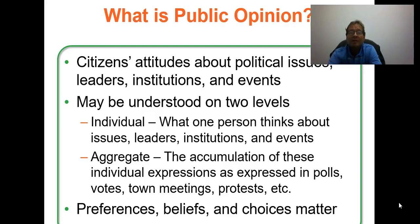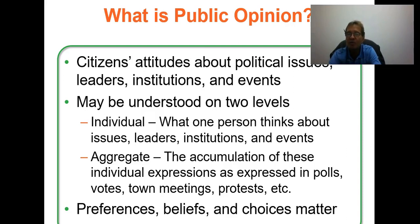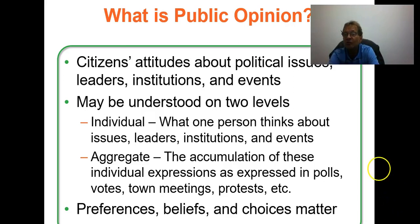What is public opinion? It's attitudes about political issues, leaders, and institutions. It can be understood on two levels — this is the key thing to remember. There is individual public opinion, what a person thinks, and the aggregate. Political scientists study and try to find what the aggregate public opinion is, using statistical measurements like polls, votes, town meetings, and protests. Preferences, beliefs, and choices matter.